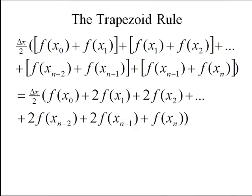So all those overlapped sides get doubled. Notice the only ones that didn't get doubled were the very first and the very last, because they're not a common side of two trapezoids.